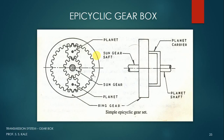When one gear is locked, the remaining two gears act as input and output members. For example, if the internal gear is locked, then the sun gear and planet gear act as input and output members respectively. Similarly, if the sun gear is locked, then the planet gear and the ring gear — one acts as the input member and the other as the output member. This arrangement allows locking one gear while taking power output from one of the remaining gears.